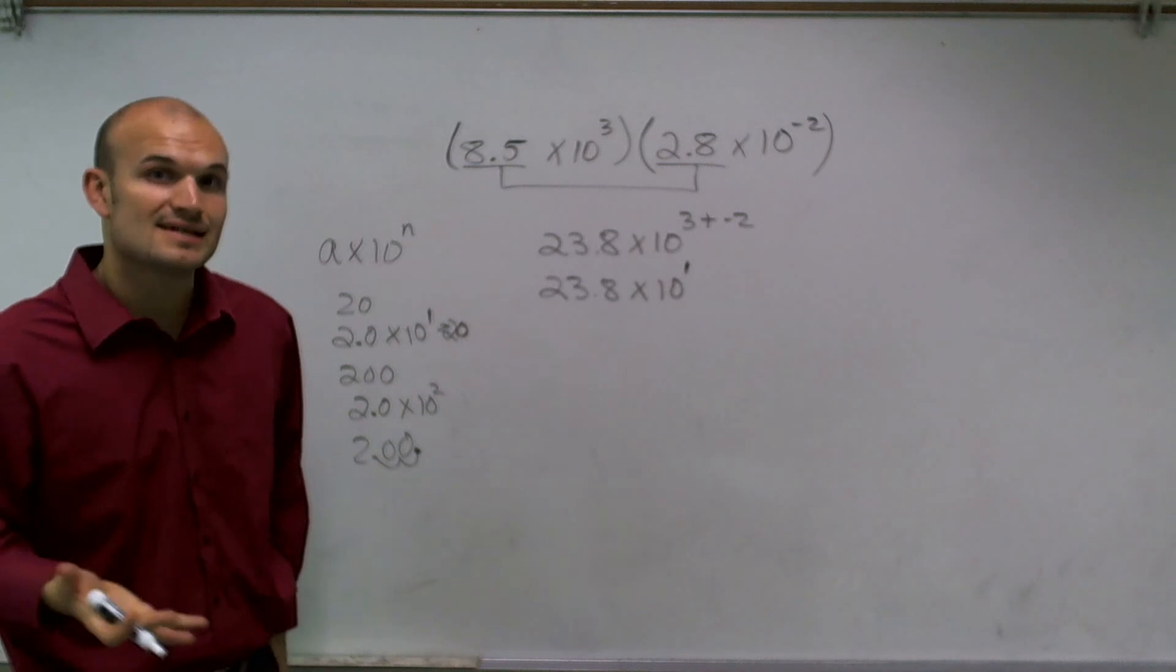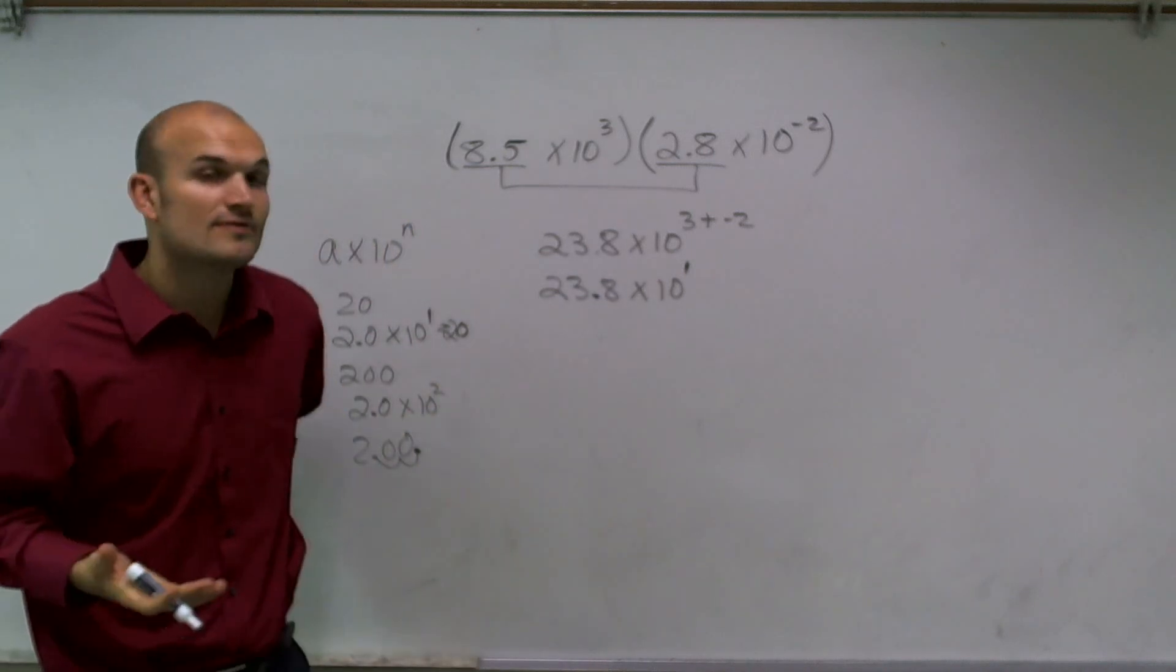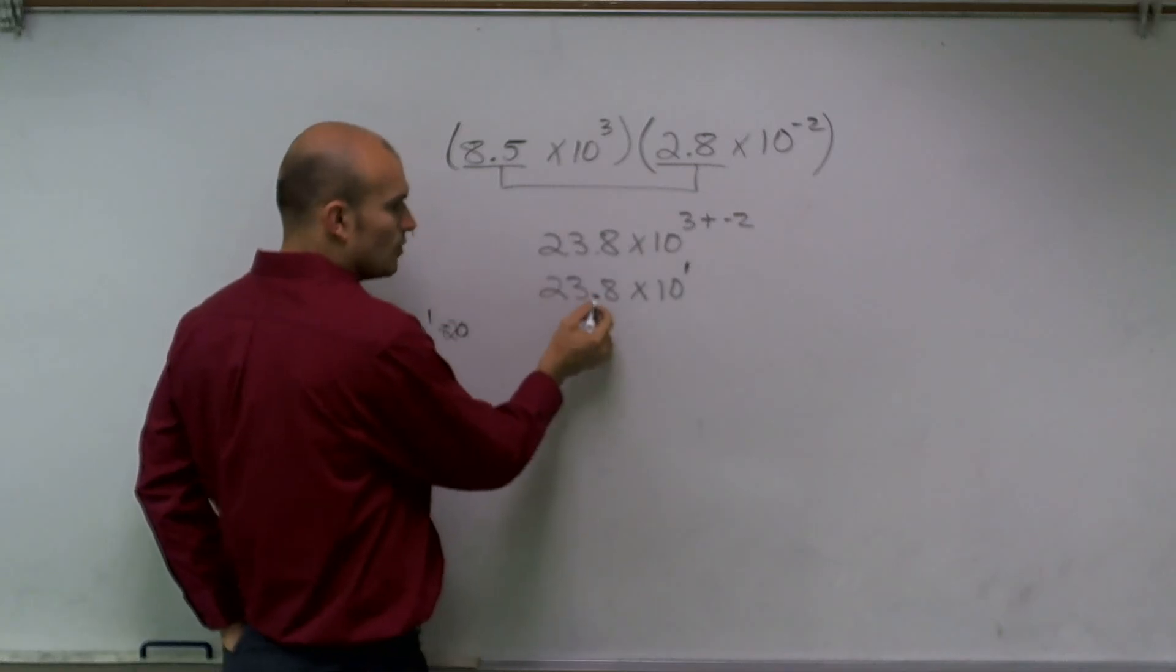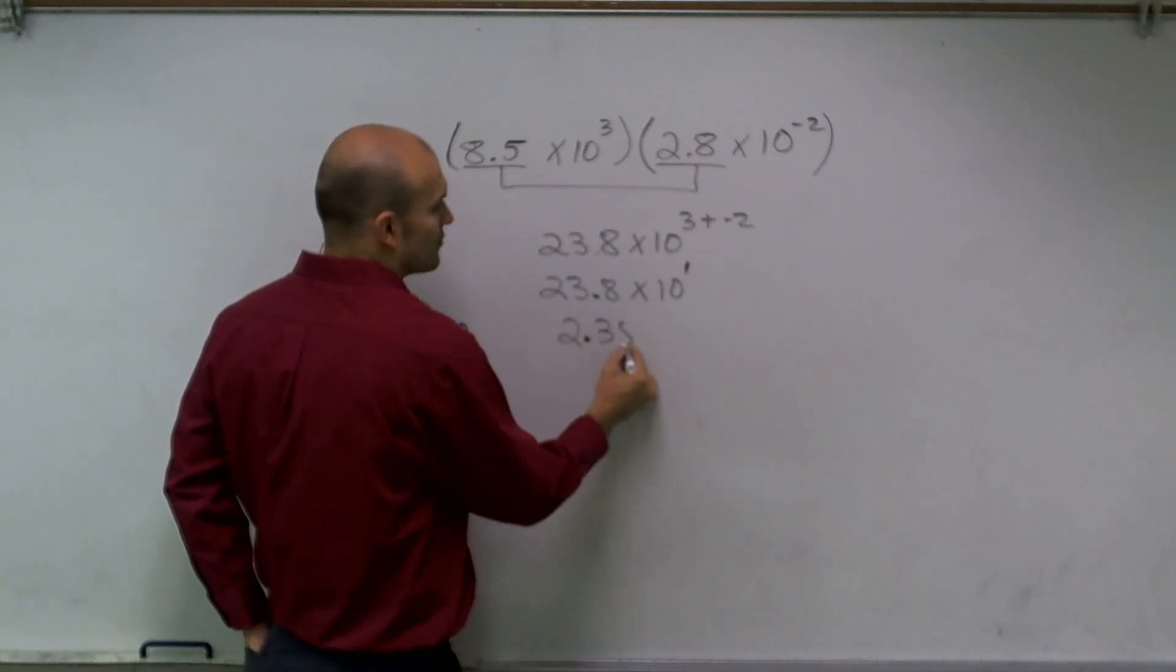However, this is not scientific notation because 23.8 is greater than 10. So what I'm going to have to do is—I want my decimal point to be right here. I need to rewrite this as 2.38.